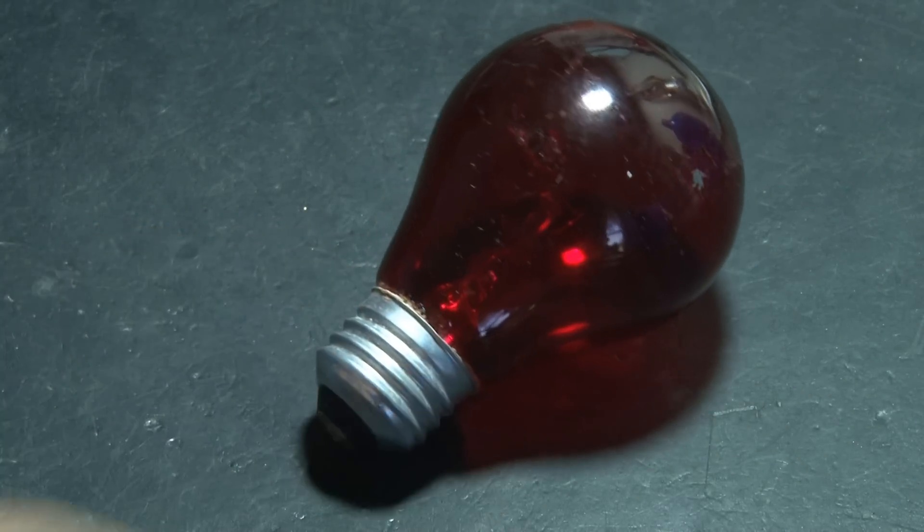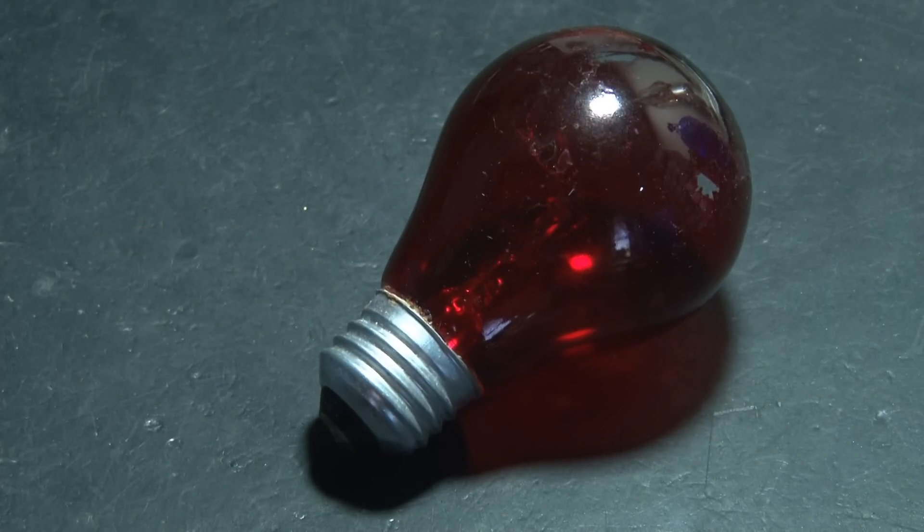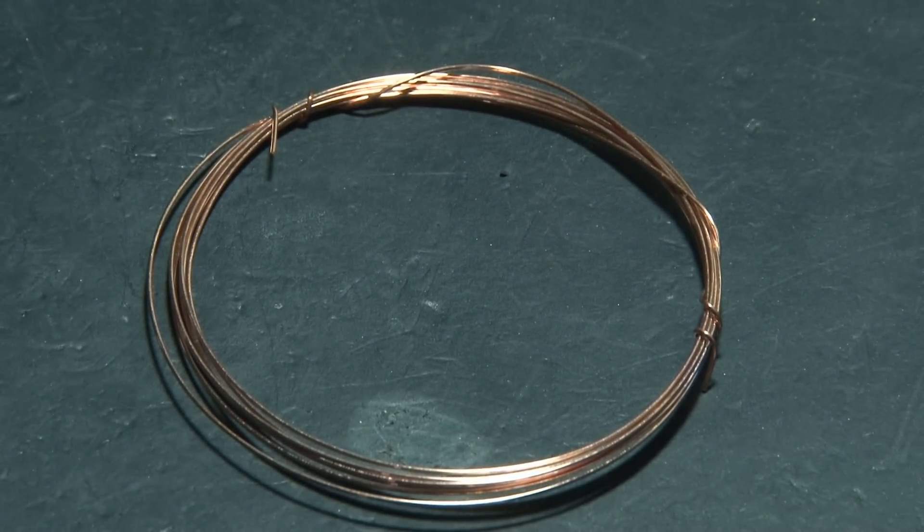Now, we're also going to be making an LED light bulb. This is kind of cool. I'm going to use a regular light bulb, well this one's red, and we're going to get some copper wire and start doing a form around the length of the light bulb.